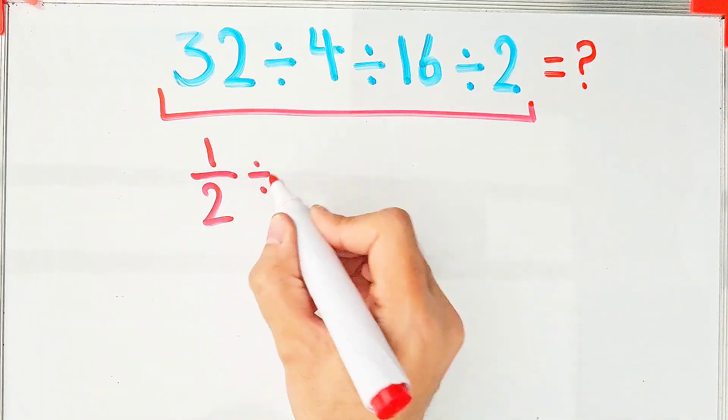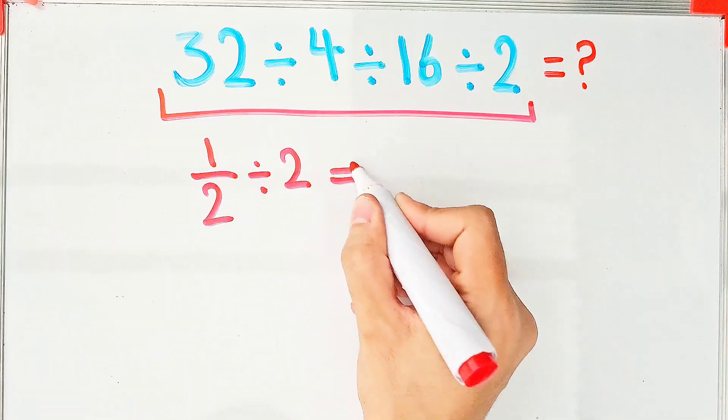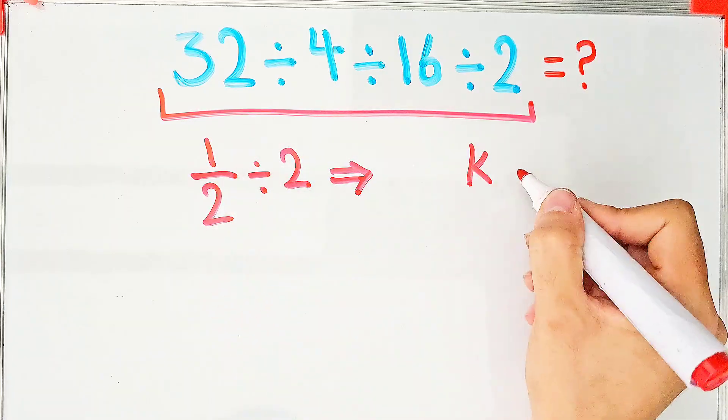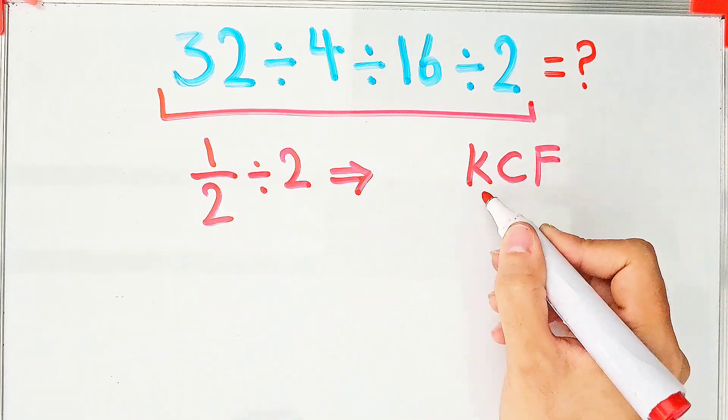To solve this part, we need to follow the KCF rule. KCF means keep the first fraction or number, then change the sign, then flip the second fraction or number.